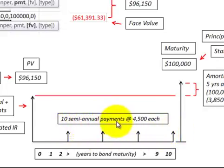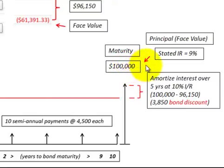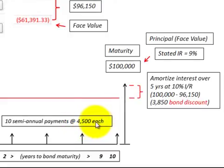In this case, I have 10 semiannual payments at $4,500 each. That's because the bond had a stated interest rate of 9%, and 9% times $100,000 equals $9,000 per year. Since it pays semiannual payments, you divide that by 2 and get $4,500 payments.